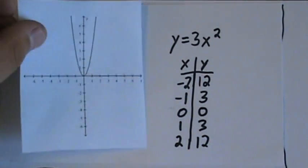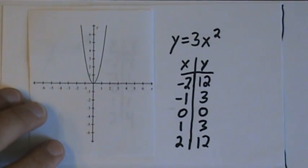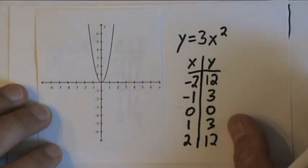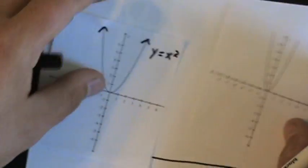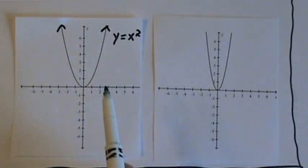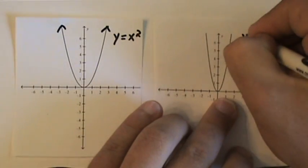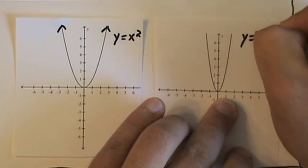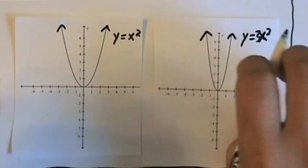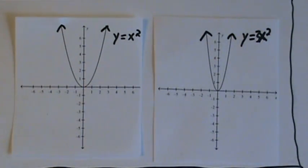If we were to graph this, we'd end up with a graph like this. Now let's compare the two graphs we have. This one's the graph of y equals x squared. This one is the graph of y equals 3x squared. Do you notice any differences? It seems that this one is a much skinnier parabola or narrower.